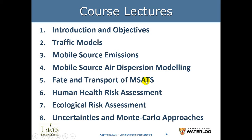This includes how pollutants will move from air to soils, from soil to plants, from air to water, from soil to water, from plants to animals, from animals to human beings. Once we have the fate and transport understood and calculated quantitatively, we are going to move to human health risk assessment, where we will assess total dose per chemical and the impact on human health.